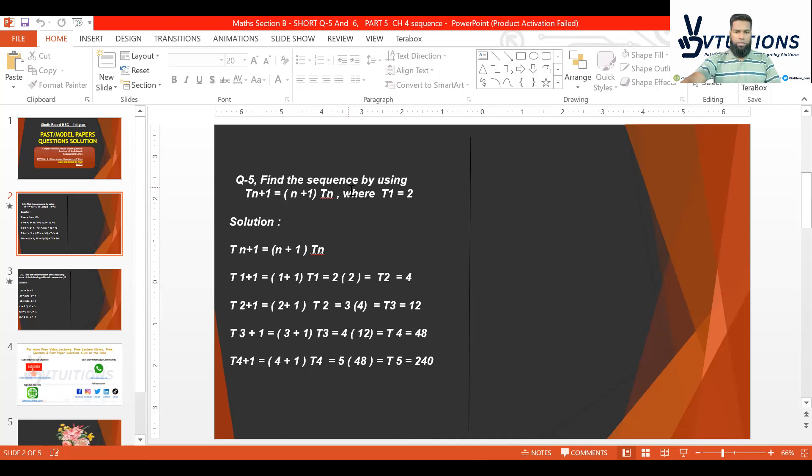In the next step, in place of Tn it takes T2, then T3, then T4, right? In this way, numbers are added up to 4. The series is formed this way. This is how the question is solved. Excellent!